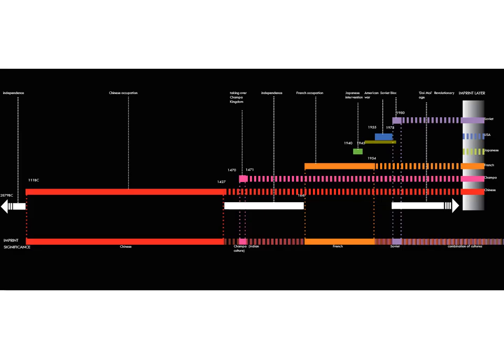Vietnamese cities have multi-layered cultural and urban landscapes. Each of these layers resonates with the imprint of the historical legacy of its period. The influences throughout our history are Chinese, Champa, French, Japanese, the USA and Soviet.